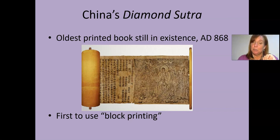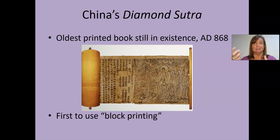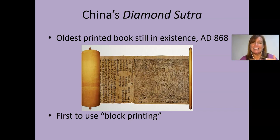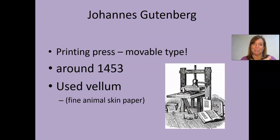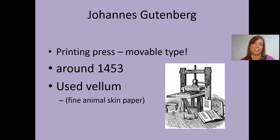The oldest printed book still in existence is called China's Diamond Sutra. The Chinese used block printing — think about those blocks you had when you were little with A, B, and C on them. You dip those in ink and stamp them on paper, then take the next letter, dip it in ink, and stamp it. It's not necessarily faster, but it's easier on the hand. The real magic, though, happened with Gutenberg's printing press. If you've taken any history class, you know there really hasn't been anything since the printing press that changed society as much — maybe the Internet, time will tell.